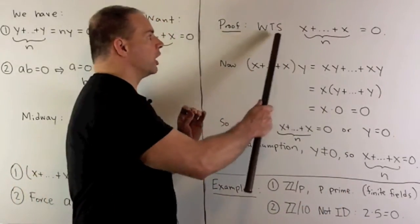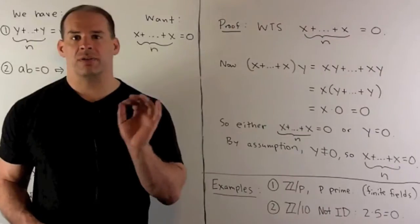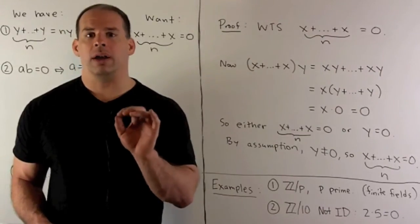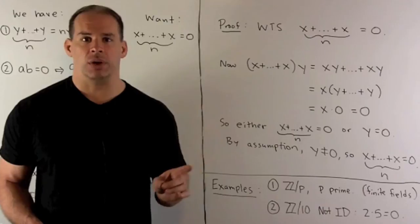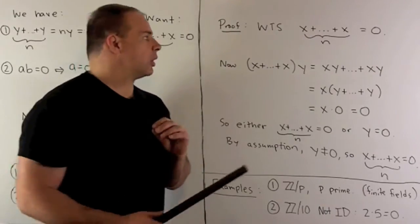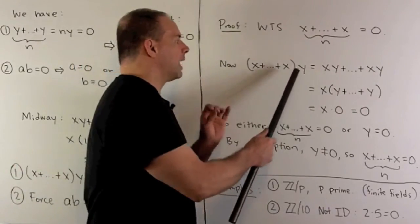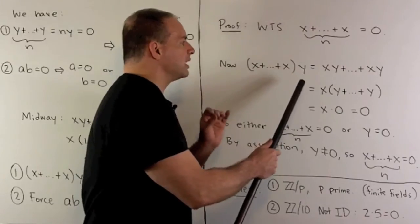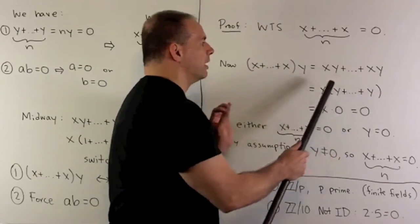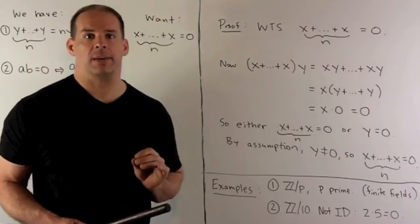Now, what we want to show, we're going to pick our x from R. I want the sum of x with itself n times equal to zero. So we're going to take that sum, and I'm going to multiply by y. So that gets us to our middle ground step, the sum of xy with itself n times.